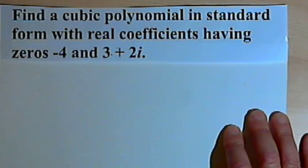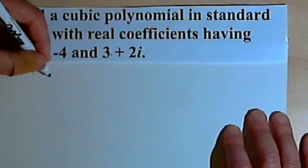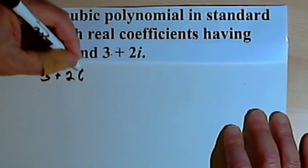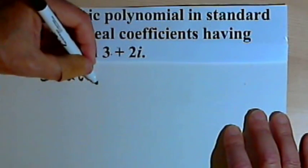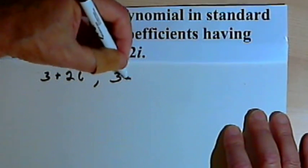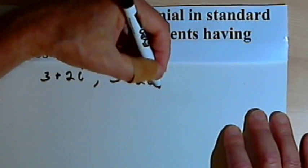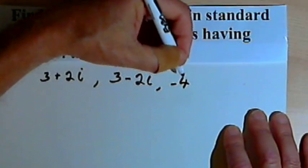Given that conjugate zeros theorem, we know that if we've got one of the zeros is 3 plus 2i, then another zero is going to be 3 minus 2i. And of course we've got that other zero that we were given. That's just negative 4.